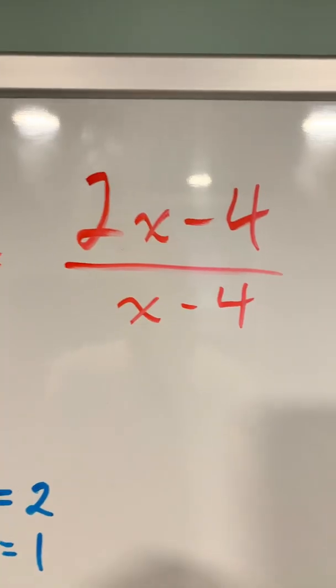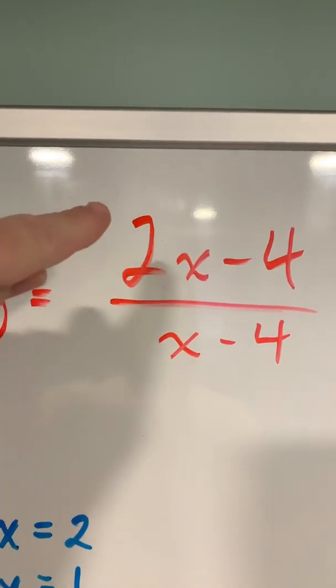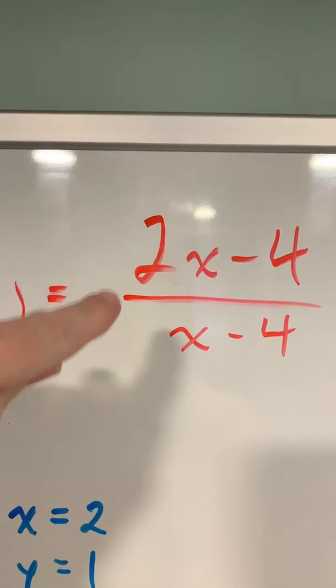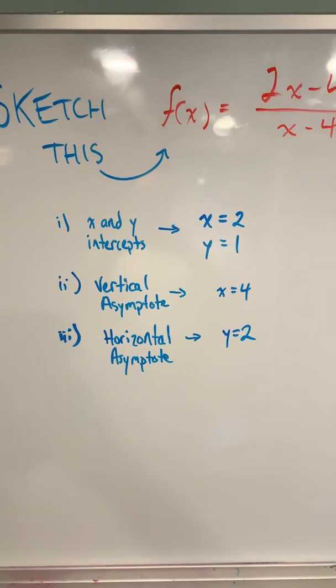Next up is the horizontal asymptote. Since the degree of the numerator is the same as the degree of the denominator, we say that the horizontal asymptote is found at the ratio of the coefficients. In this case, that's 2. So y equals 2 is the equation of our horizontal asymptote.